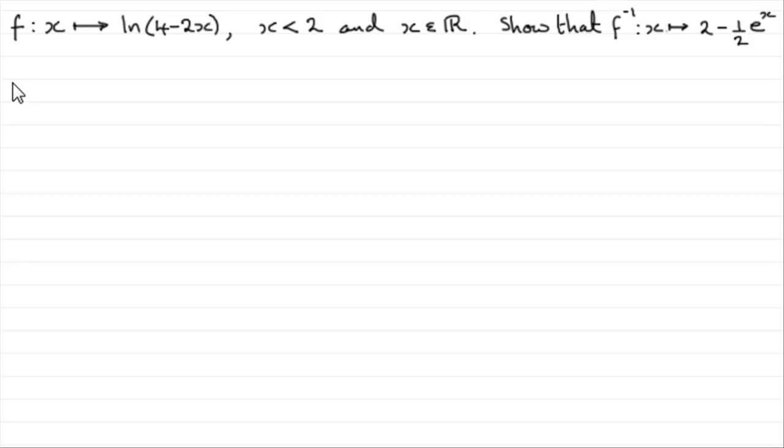Hi. Now, in this example, we're given that f is a function such that x maps onto the natural log of 4 minus 2x, and x is less than 2, and it's also a real number.